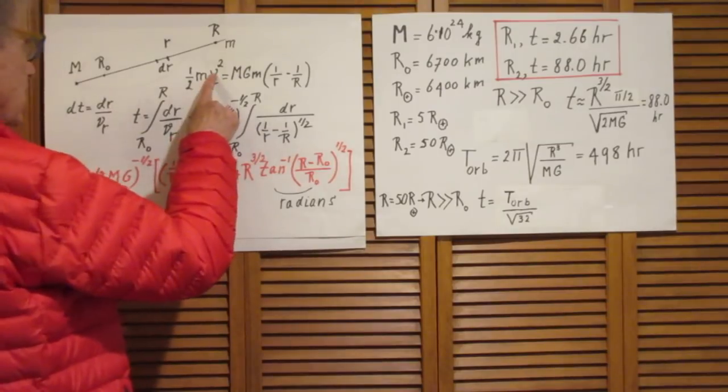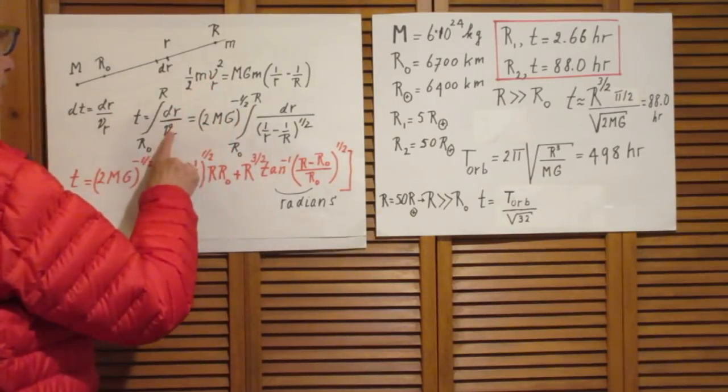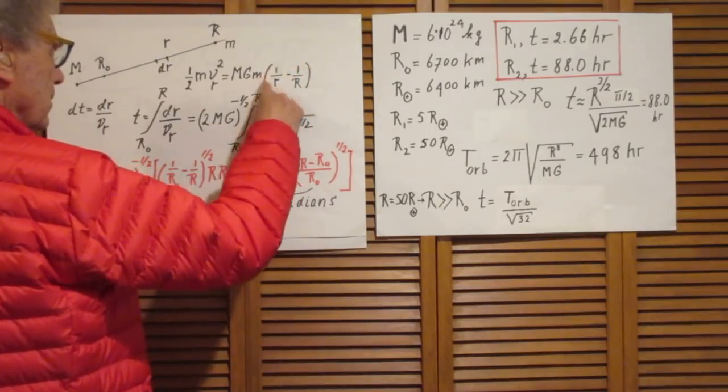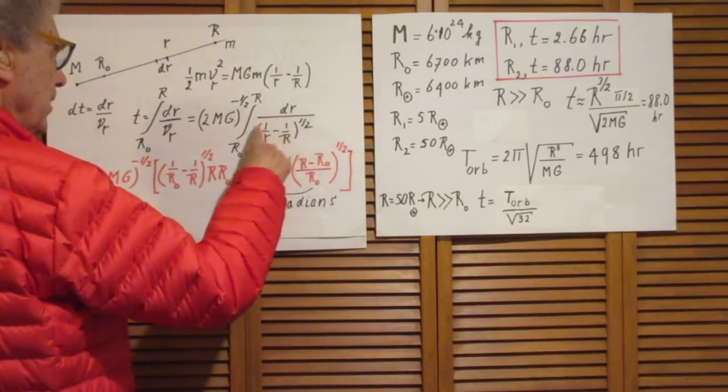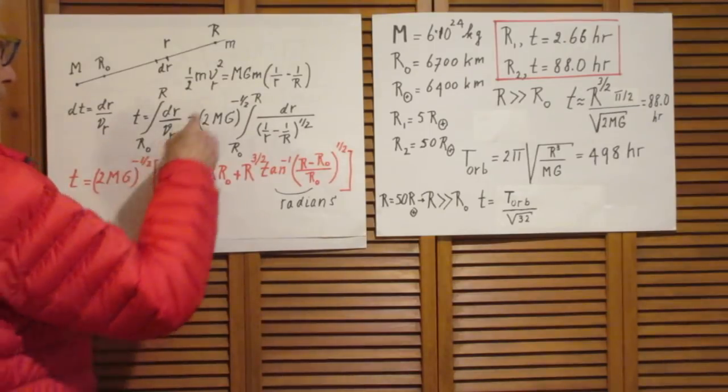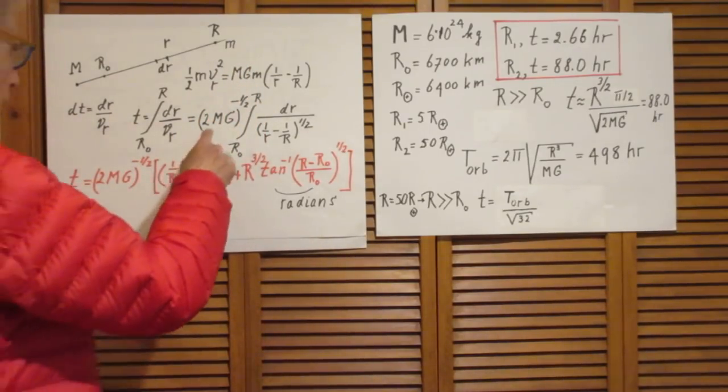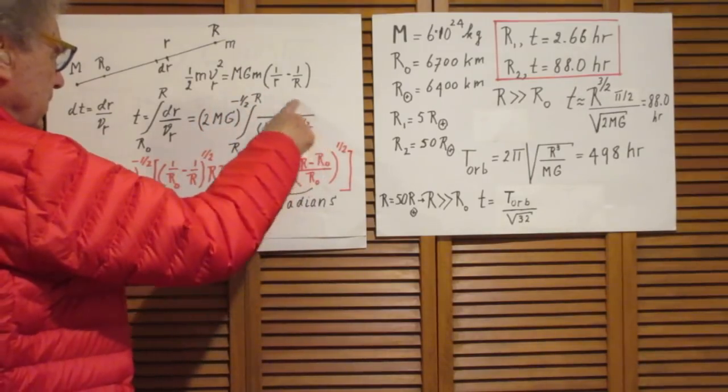So t is either the integral of minus dr over vr from R to R0 or, which is the same thing, plus the integral from R0 to R dr over v. So, you take this vr, you put it down stairs. Notice this term here, it's a square root, it's down here. And this term here, you'll find here. So it comes down to calculating this integral.